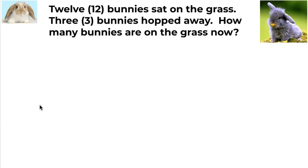This time when I read the problem, I start with twelve bunnies. Then three bunnies hop away. Hopping away means that they're leaving, or we're subtracting them. They're separating from the twelve bunnies. The question is asking me, how many bunnies are on the grass now? So again, it's asking me for the result after the three bunnies hop away.